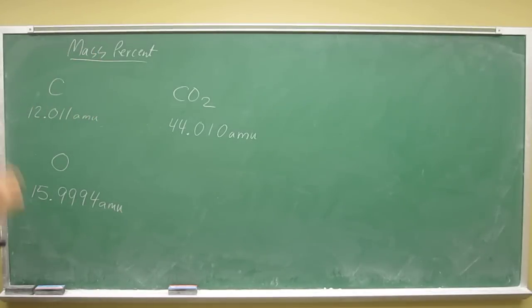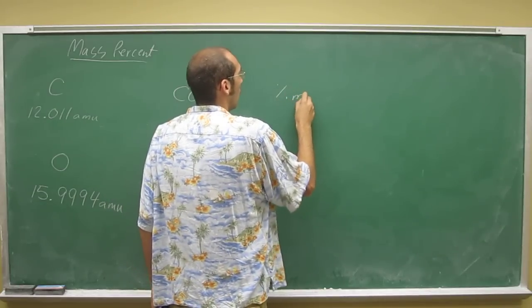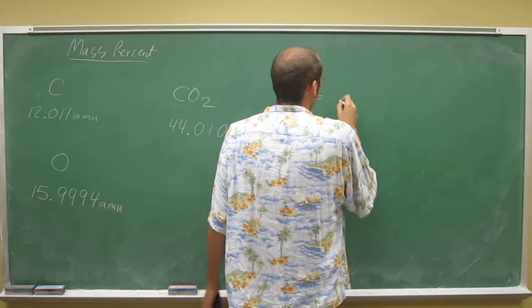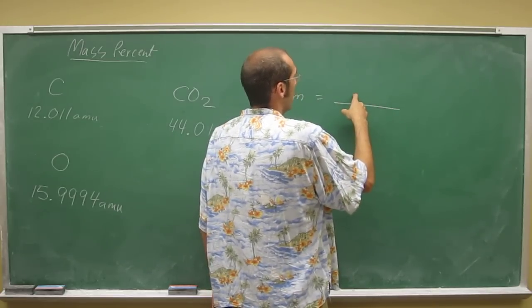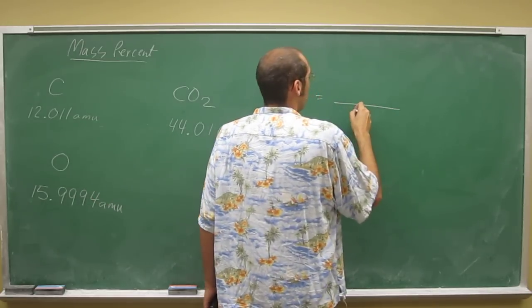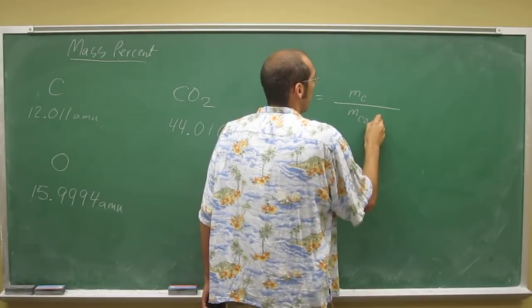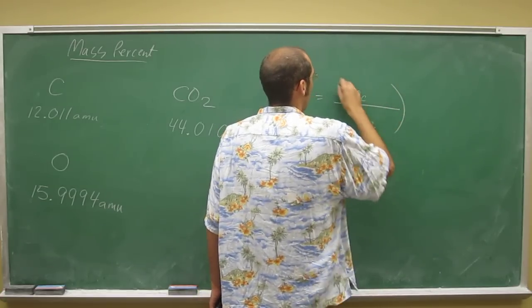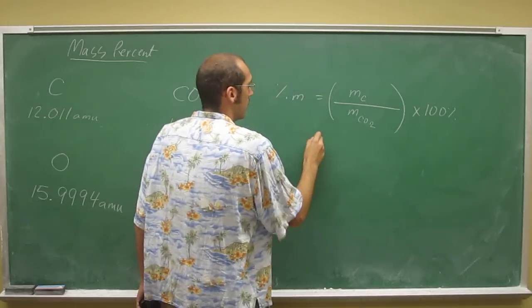In order to do mass percent, like we said, we do the part over the whole. So in this case, the mass of carbon over the mass of carbon dioxide times 100%. And that's it.